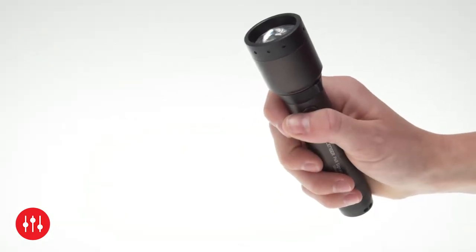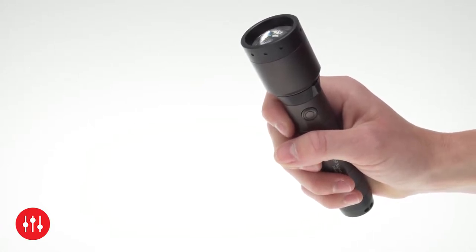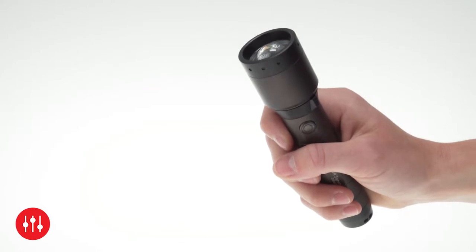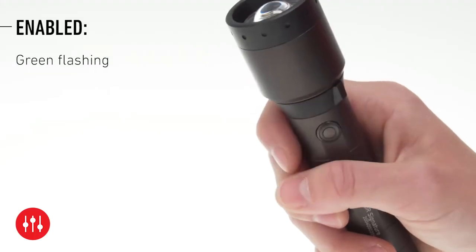Now press twice to deactivate the low battery warning. The front switch will flash red twice to confirm. You can also re-enable the low battery warning in the same way. Then the front switch would flash green twice instead of red twice to confirm.